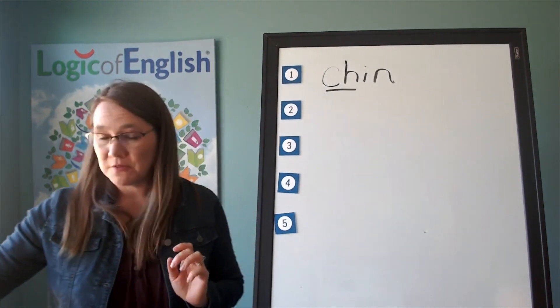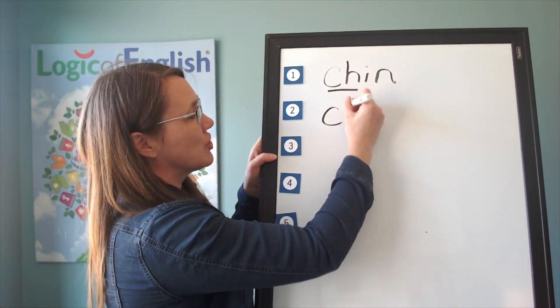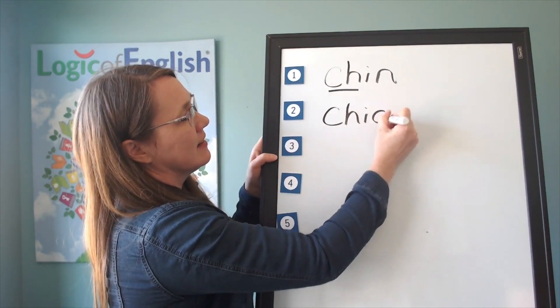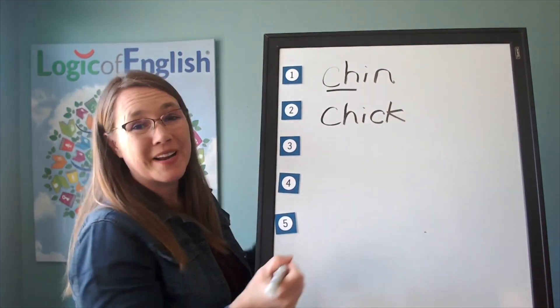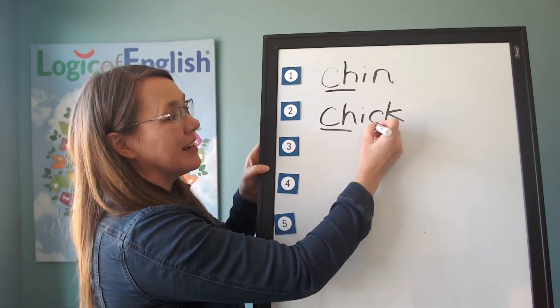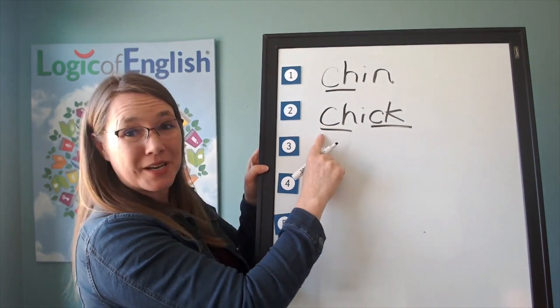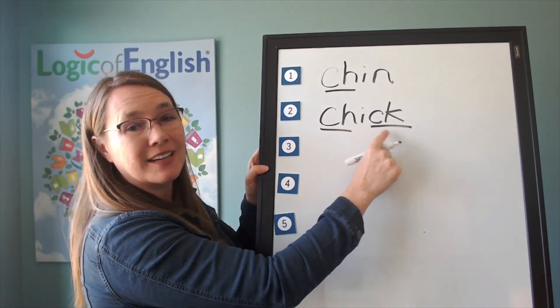Now, how about if you help me write it with my marker? Ch-i-ck. Chick. Great. And how will we mark it? We'll underline the ch and we'll underline the ck. Great. Let's read it one more time. Ch-i-ck. Chick.